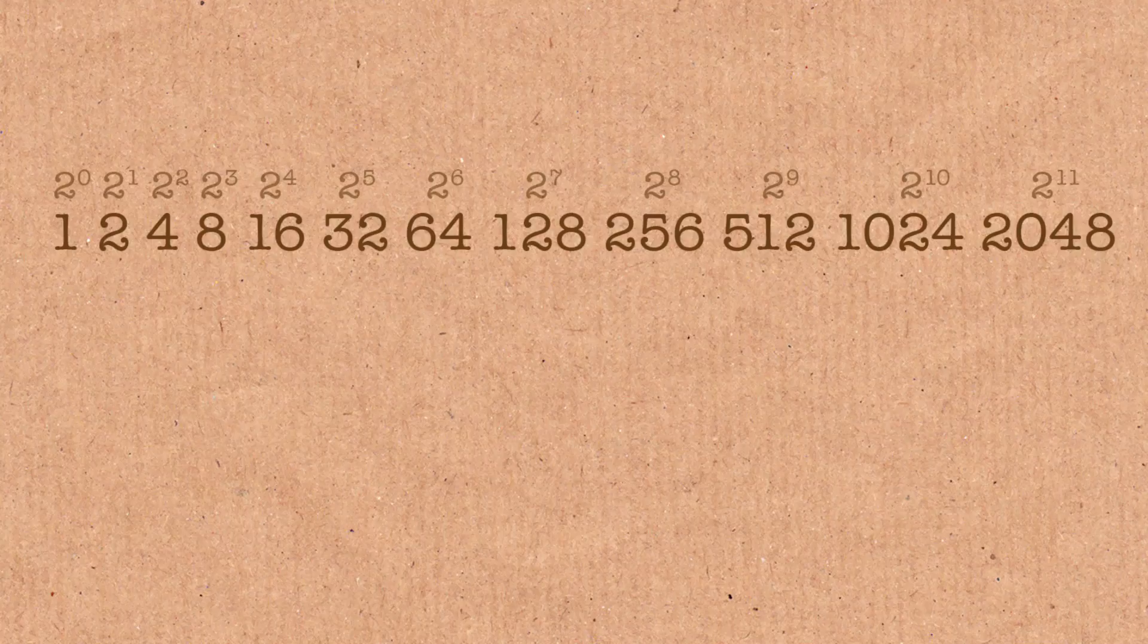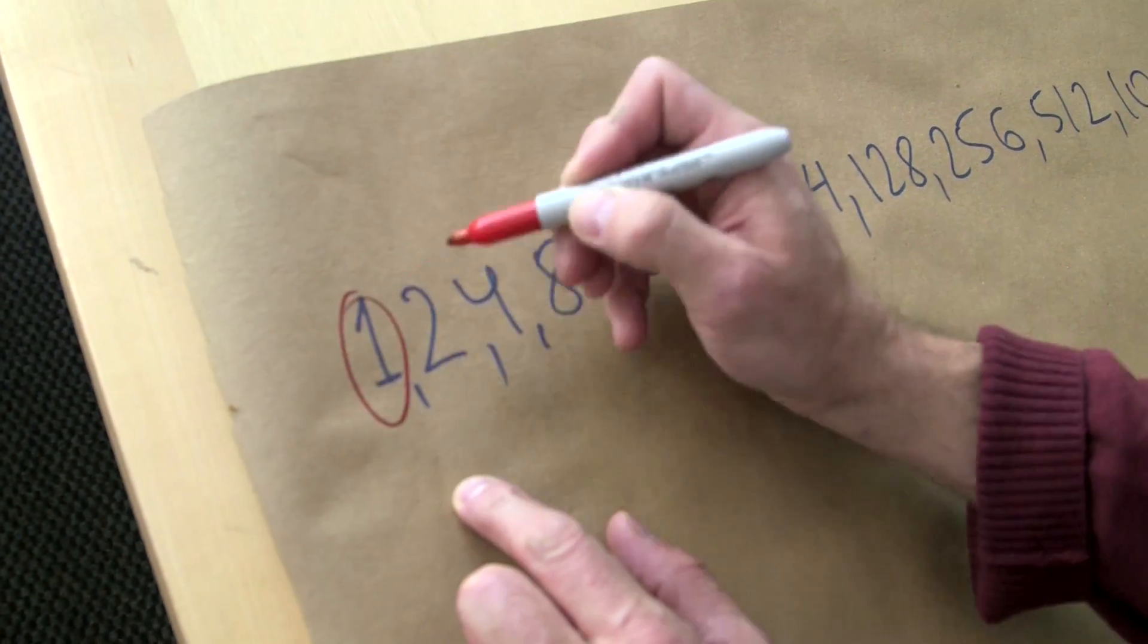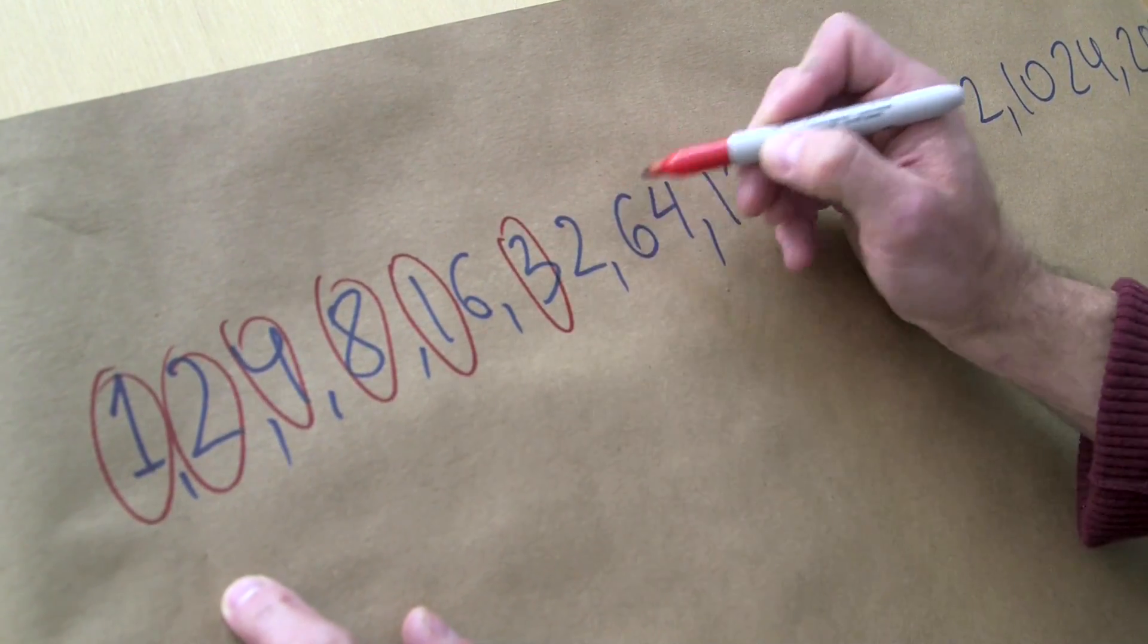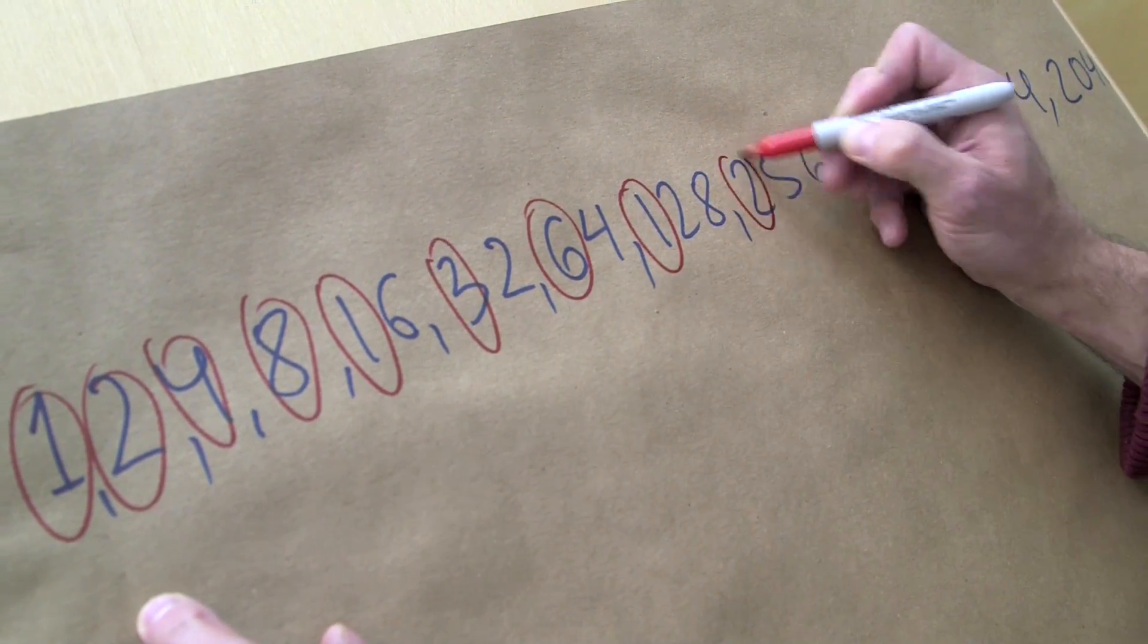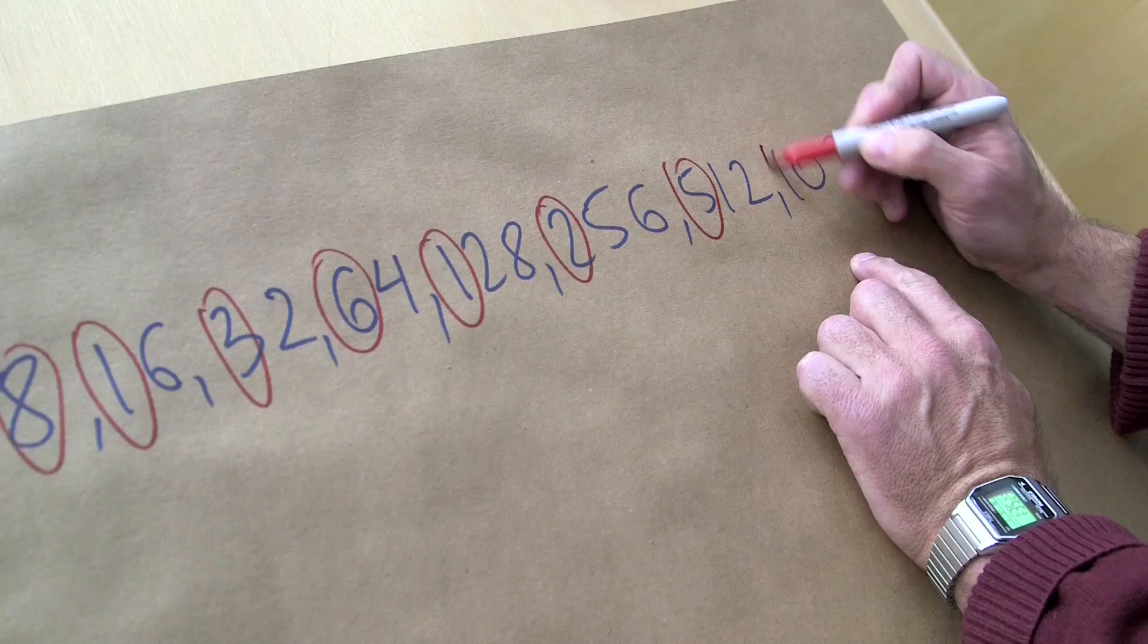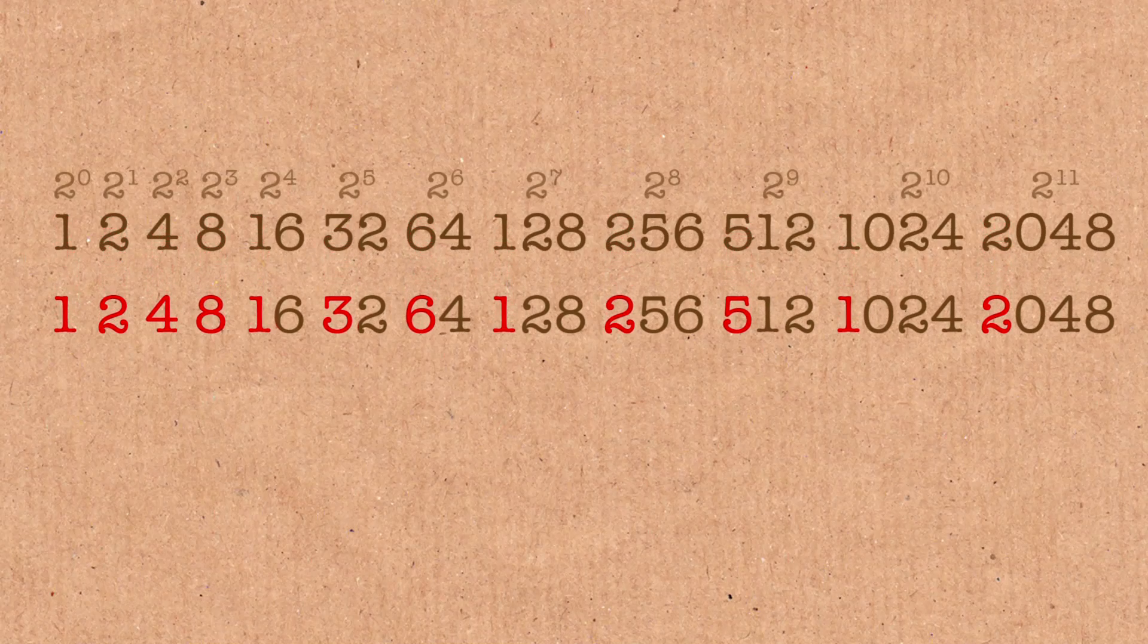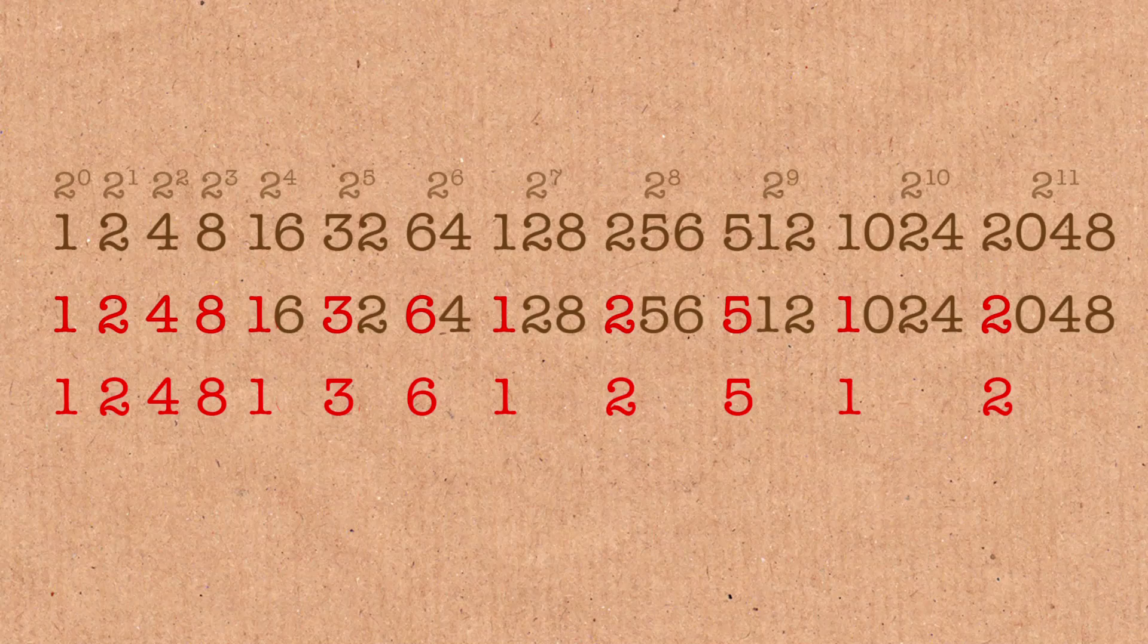Well, let me make things easier and only concentrate on the first digit of these guys. We keep 1, 2, 4, 8 and then we only keep 1, 3, 6, 1, 2 and 5, 1, 2 and so on. So let's collect all this data and put this all together and that's what we get.